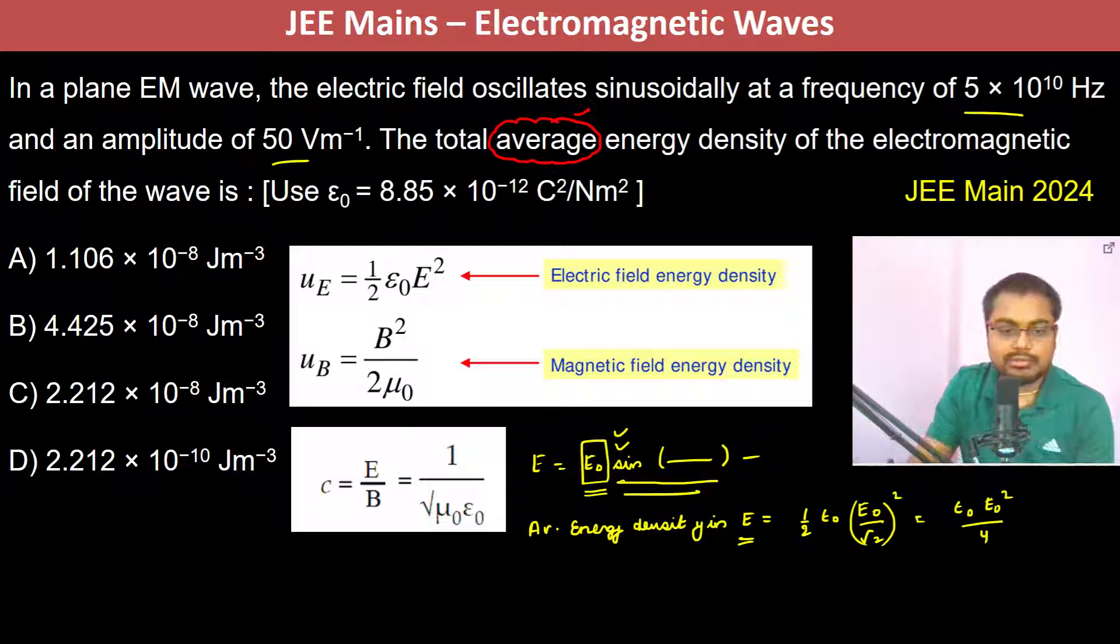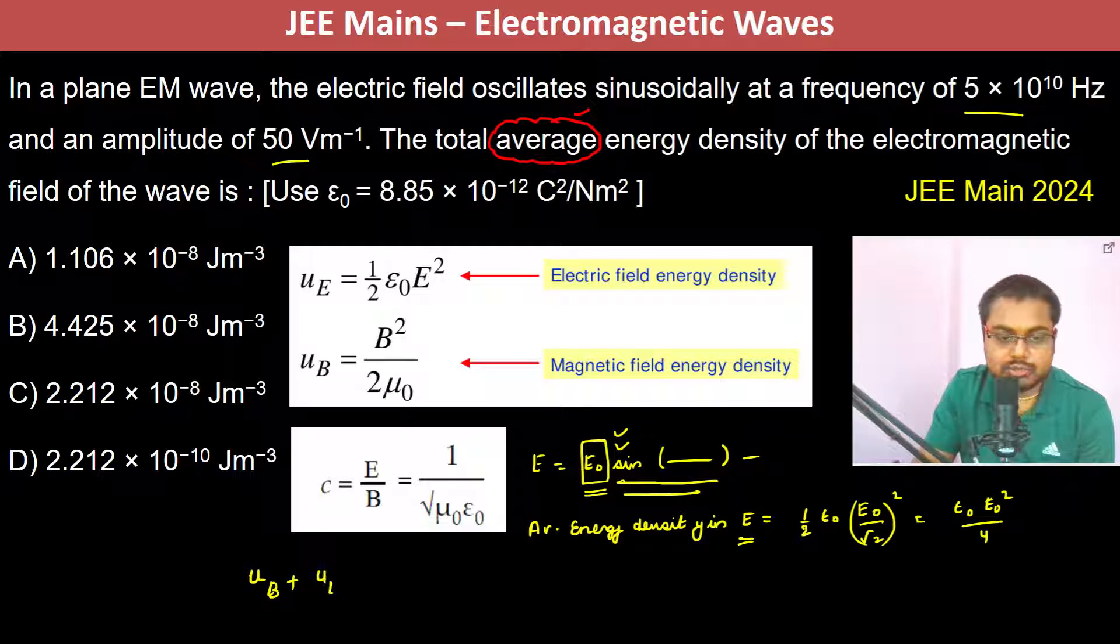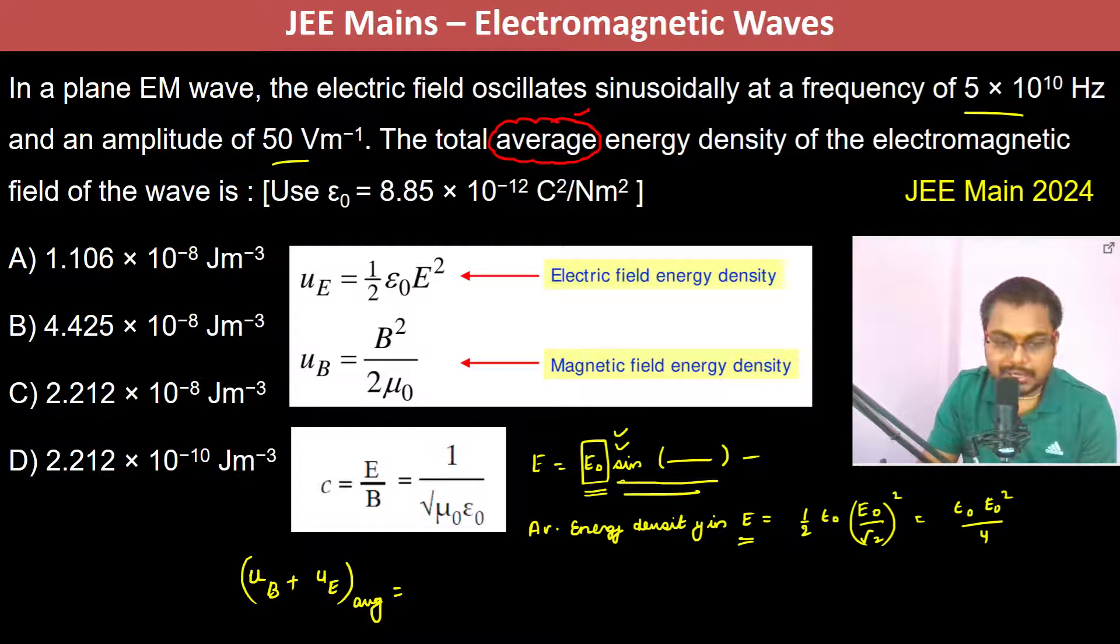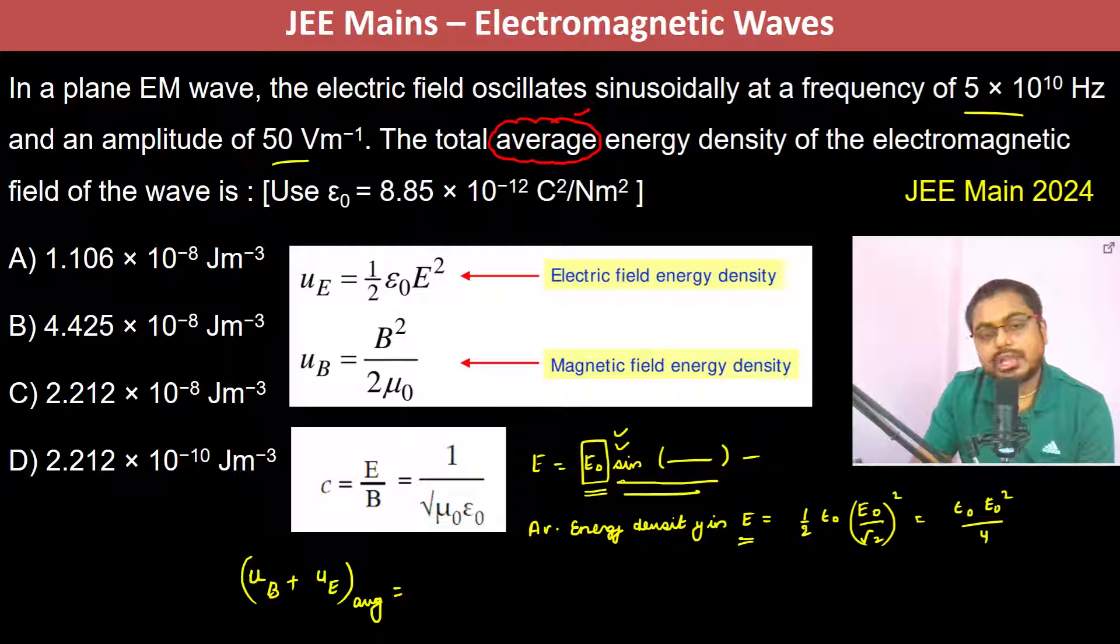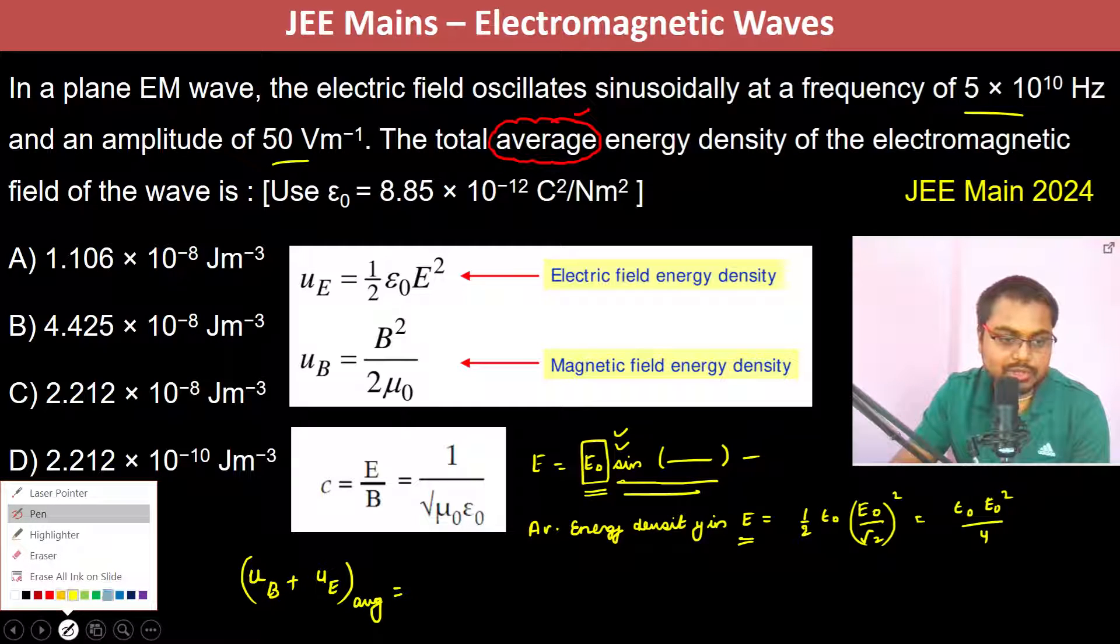Now we have to find out the total average density. So the total average density is going to be UB plus UE, all in average.